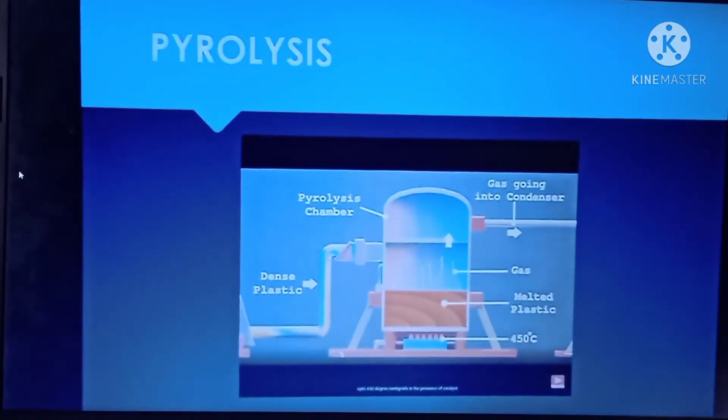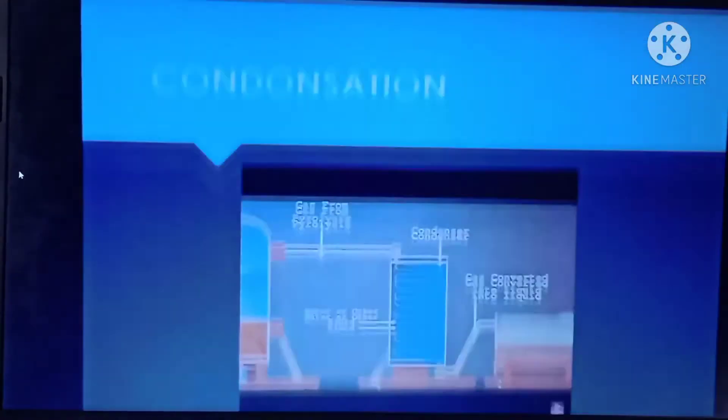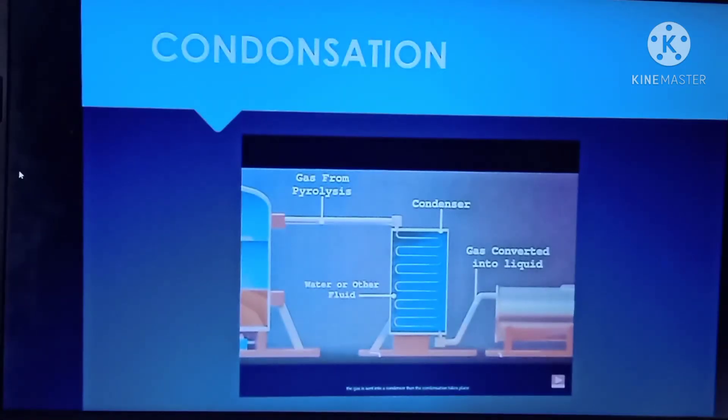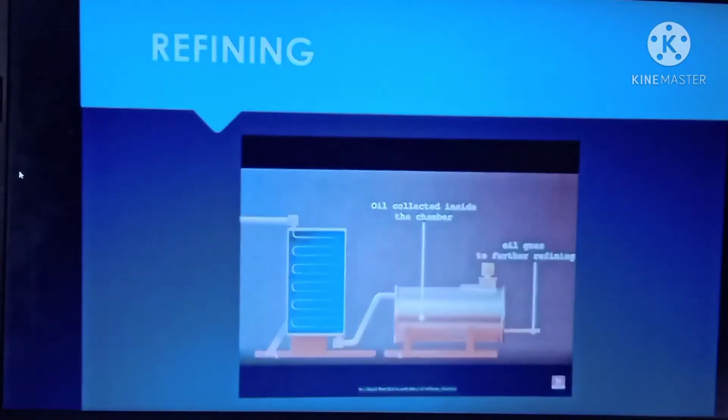These smaller pieces are sent to pyrolysis chamber and here plastic is heated up to 450 degrees Celsius in the presence of catalyst and in the absence of oxygen. The plastic is converted into gaseous heat and this gas is sent to condenser and there condensation takes place. Condensation means conversion of gas into liquid form.